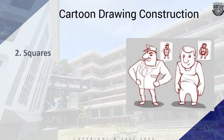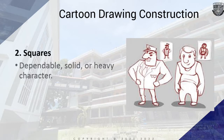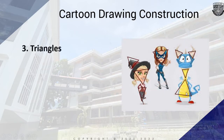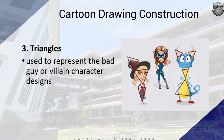Squares are used to depict dependable, solid, or heavy characters — strong characters such as policemen or a dad. Triangles are used to represent the bad guys or villains in character design. Those are the common drawing construction shapes to consider in cartoons.